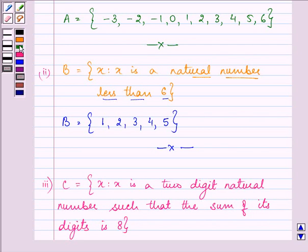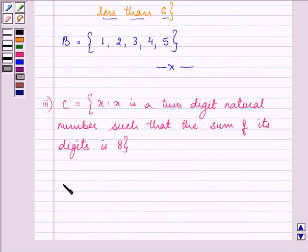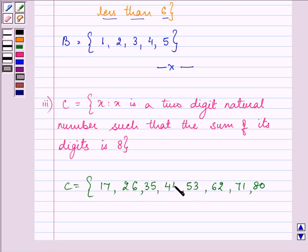Now it has to be a two-digit natural number such that the sum of its digits is 8. So it can be, first of all, 80. Then it can be 71 or 17. Then it can be 62 or 26. Then it can be 53 or 35. Then it can be 44.